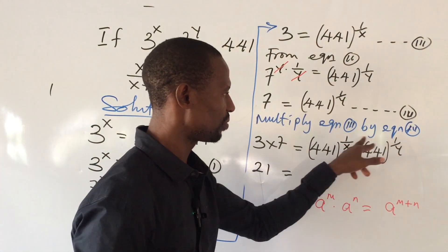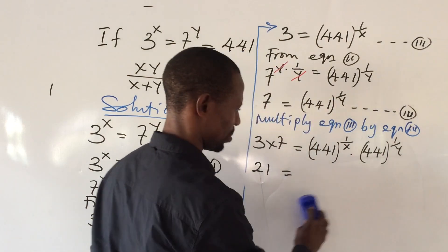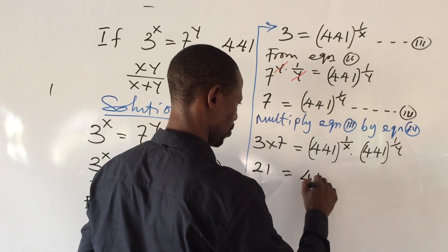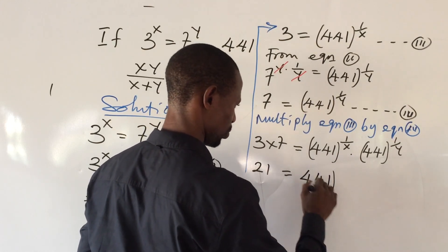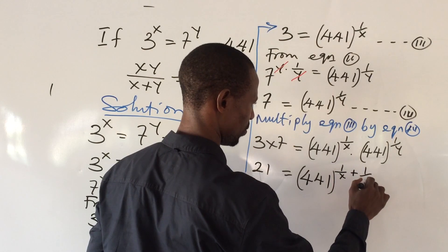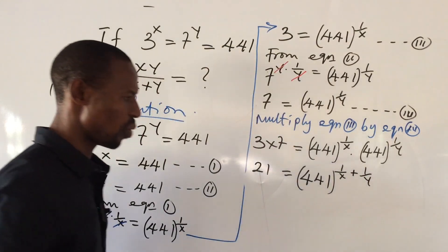So let's sum up this power. If we do that, this will now give us 441 all to the power of 1 all over x plus 1 all over y.